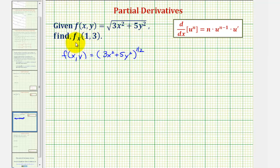And now to find the partial derivative with respect to x, we'll treat y as a constant and differentiate with respect to x. But notice how we'll have to apply the chain rule here, where the inner function would be 3x² + 5y².